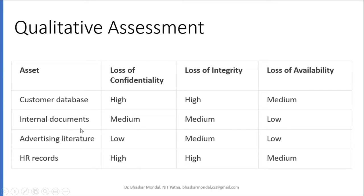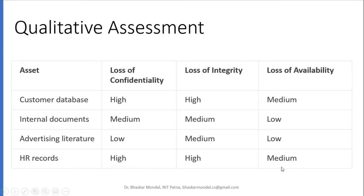For an internal document, loss of confidentiality is minimum to medium, loss of integrity is medium, and loss of availability is low. Then if it is advertising literature, loss of confidentiality is low, loss of integrity is medium, and loss of availability is low. But if it is an HR record, loss of confidentiality is high, loss of integrity is high, and loss of availability is medium.